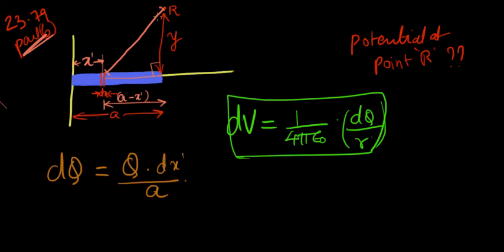So again, the distance from the slice to the point R is given by the hypotenuse of the right triangle, which can be given as the distance, let's call it d for now, can be given by root of y squared plus A minus x prime the whole squared. Perfect.